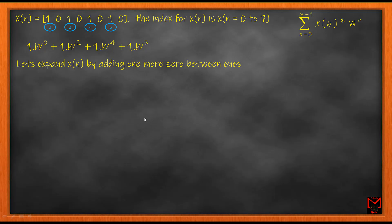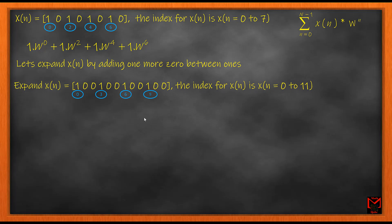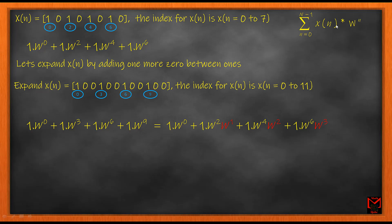Now I'm going to expand this signal. To expand it I'm going to pack more zeros — adding one more zero between each one, so the spacing increases from one zero to two zeros. When the spacing increases you are expanding the signal. This expanded signal has indexing 0, 3, 6, 9. Bringing in the Fourier transform, I get 1·W⁰ + ... and I can represent this in a form where W's still use the same powers of 0, 2, 4, 6 to correlate with the previous Fourier transform.